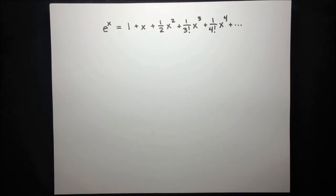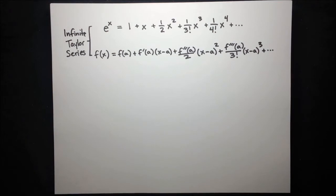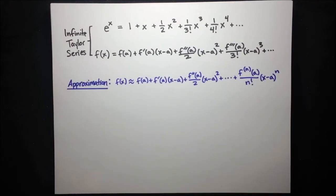More generally, there's a formula for the Taylor series of a function f centered around x equals a. Often we want to approximate a function with only up to the nth degree of the Taylor series. This approximation isn't perfectly accurate — it will often be off by a small amount, and there's a bound on that amount of error, which is called the Lagrange error bound.